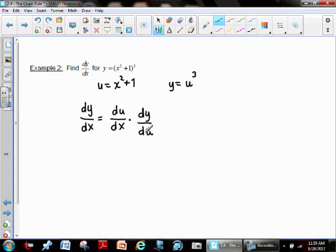And if you think about this, it does make some sense because the du's, in a roundabout way, sort of do cancel, and you would have a dy on top and a dx on bottom, which is exactly what you're trying to find.